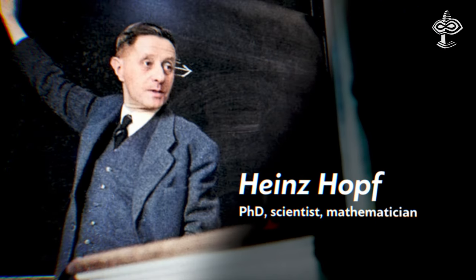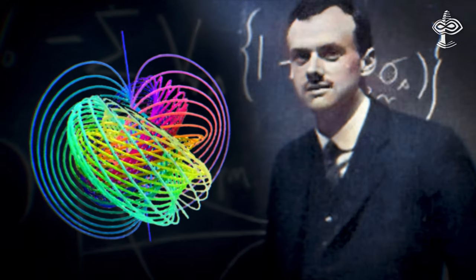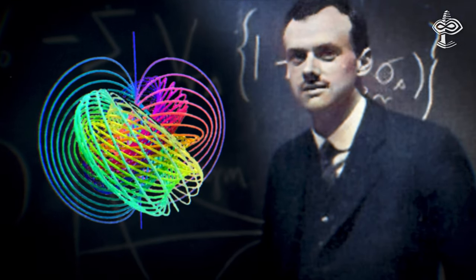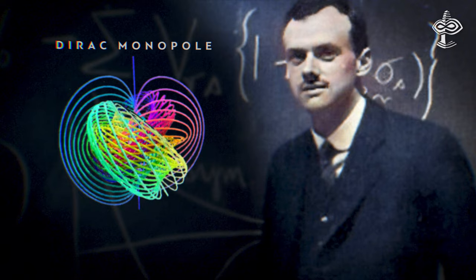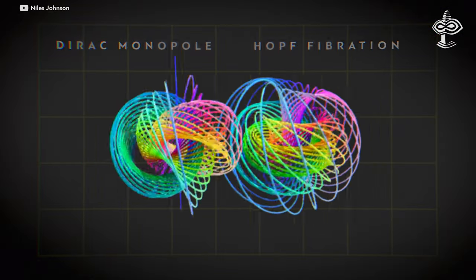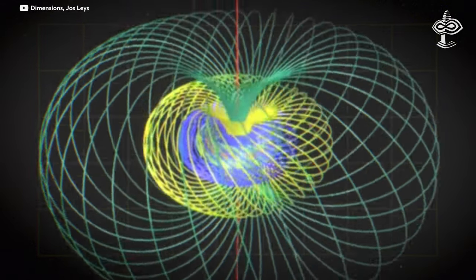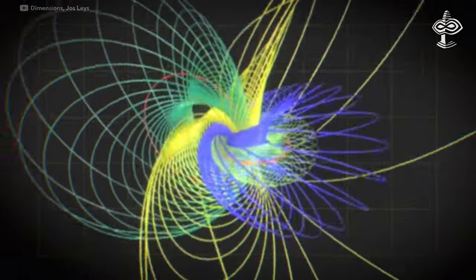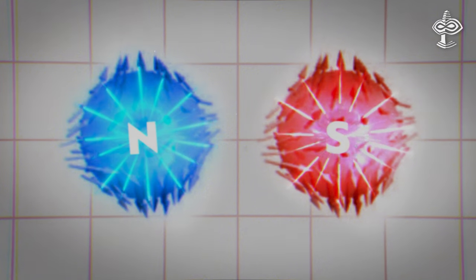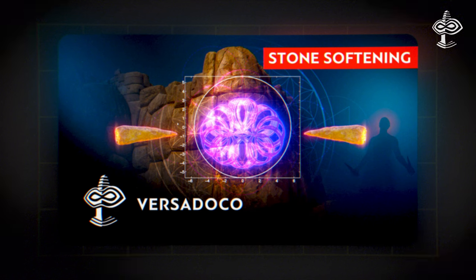Historical accounts reveal that Heinz Hopf in topology and Paul Dirac in quantum physics discovered this structure concurrently and in the same year. In the realm of physics, Dirac's discovery led to the concept known as the Dirac monopole. It took decades for scientists to realize that these different concepts were manifestations of the same fundamental principle. We discussed how magnetic structures akin to Dirac monopoles can be useful in stone softening and transportation techniques in this episode.